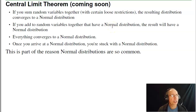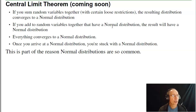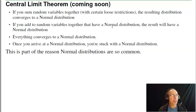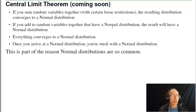Part of the reason it's so important is the Central Limit Theorem, which is coming up soon. The Central Limit Theorem states that if you sum a random variable together with certain loose restrictions, the resulting distribution converges to a normal distribution. So basically if you add a whole bunch of things together, it becomes normal. Plus, if you take a normal distribution and add it to a normal distribution, the result is a normal distribution. Everything converges to a normal distribution, and once you get there, you're stuck — you'll stay with a normal distribution. That's part of the reason normal distributions are so common.